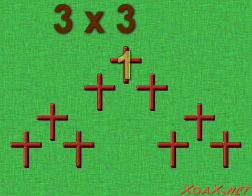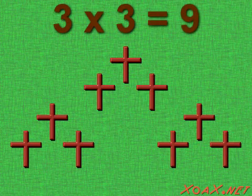And we end up with 1, 2, 3, 4, 5, 6, 7, 8, 9 crosses total. So the product of 3 times 3 is 9.